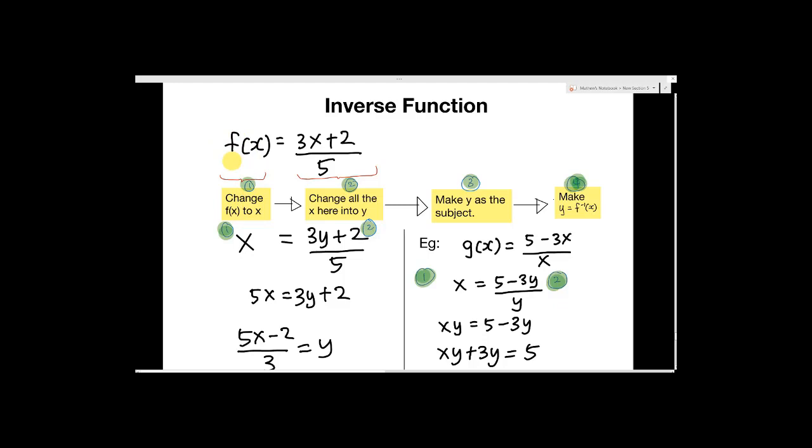On the other side, whatever X you see, you just change it back to Y. Like this case, 3x plus 2 - you see the X here, change the X into Y. Then the next thing is change all the X and make Y the subject.